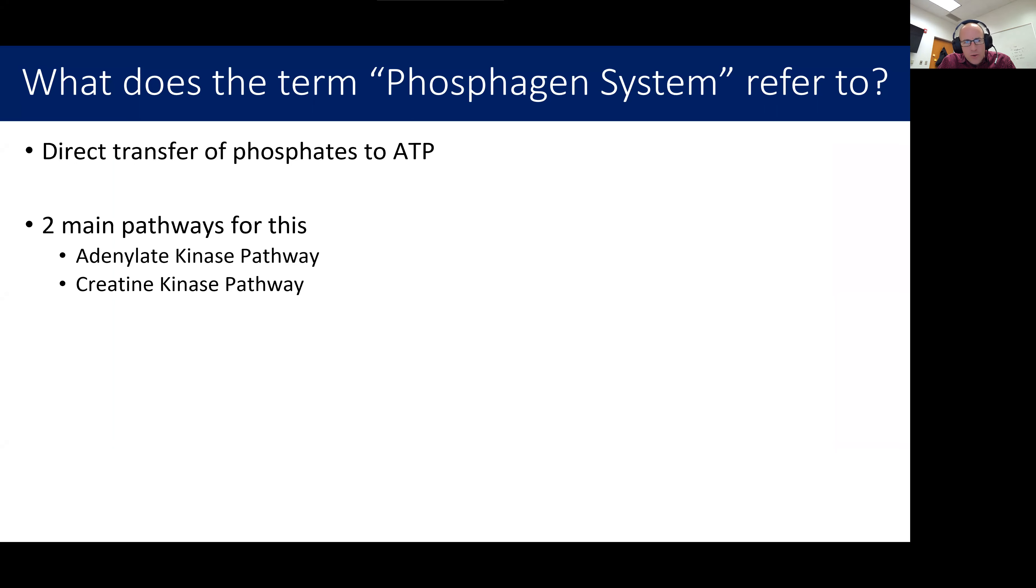This refers to pathways that directly transfer phosphates back onto ADP. And when they put the phosphate on, now the ADP becomes ATP. So these usually take a single step and happen very rapidly.